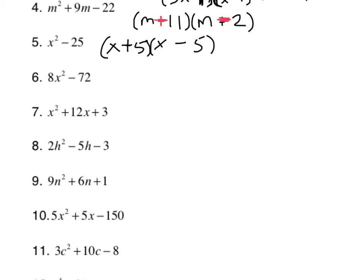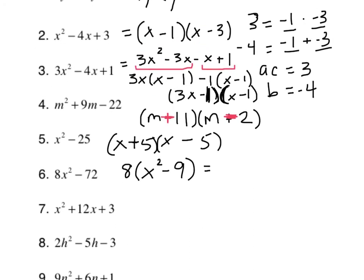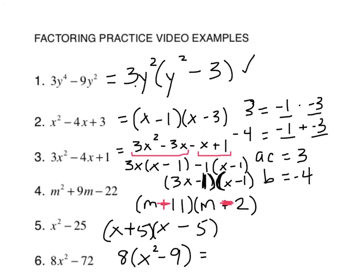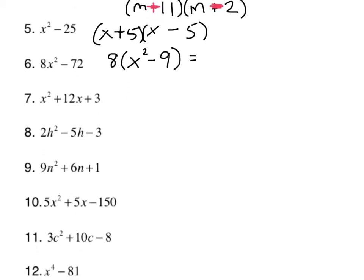All right. Number 6. Okay. So now I have to think here about a GCF again. So factor out the GCF. So it's an 8. Leaving me x squared minus 9. So what is that? x squared minus 9. Well, that's a difference of squares. So sometimes I'm not going to be able to go any further. But x squared minus 9 I can because that's a difference of squares. It's x plus 3 and x minus 3.